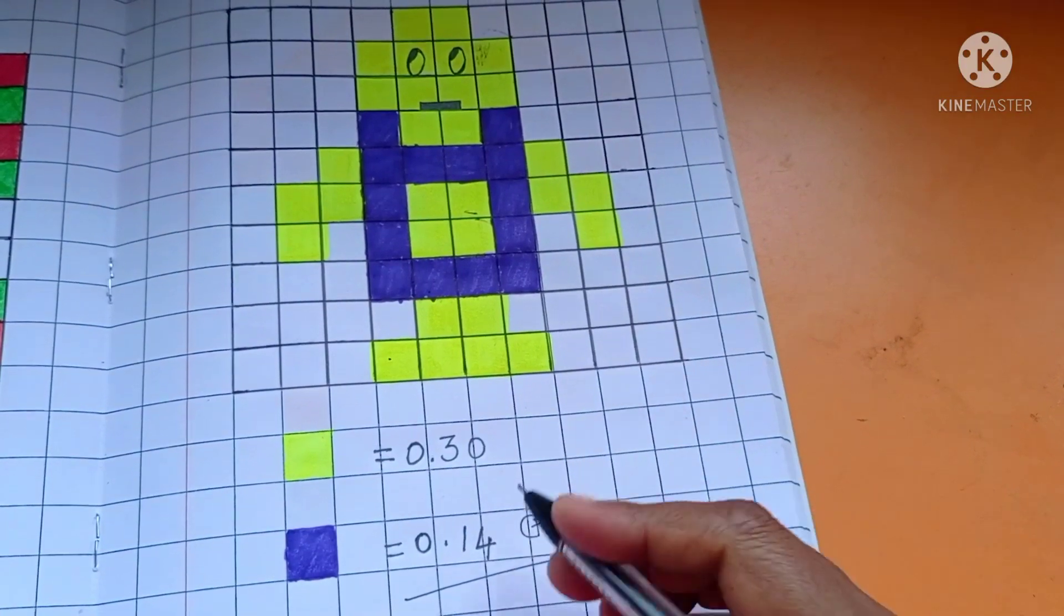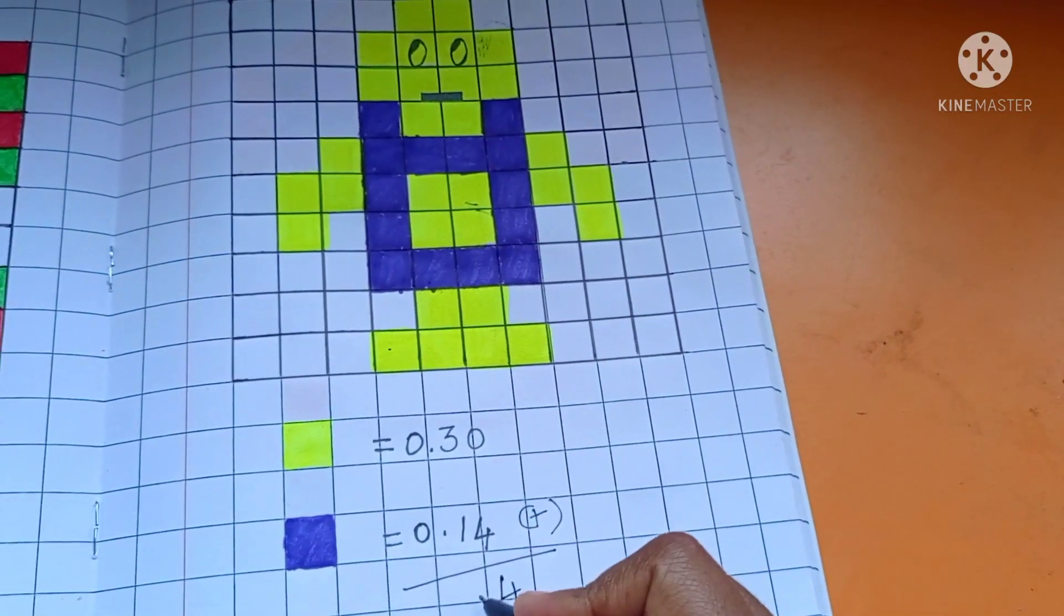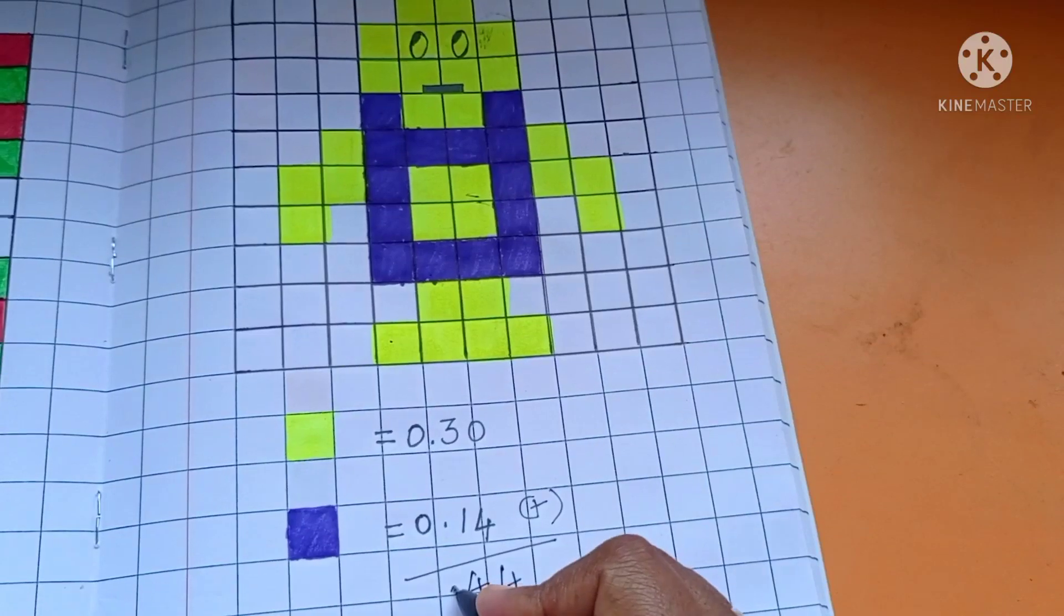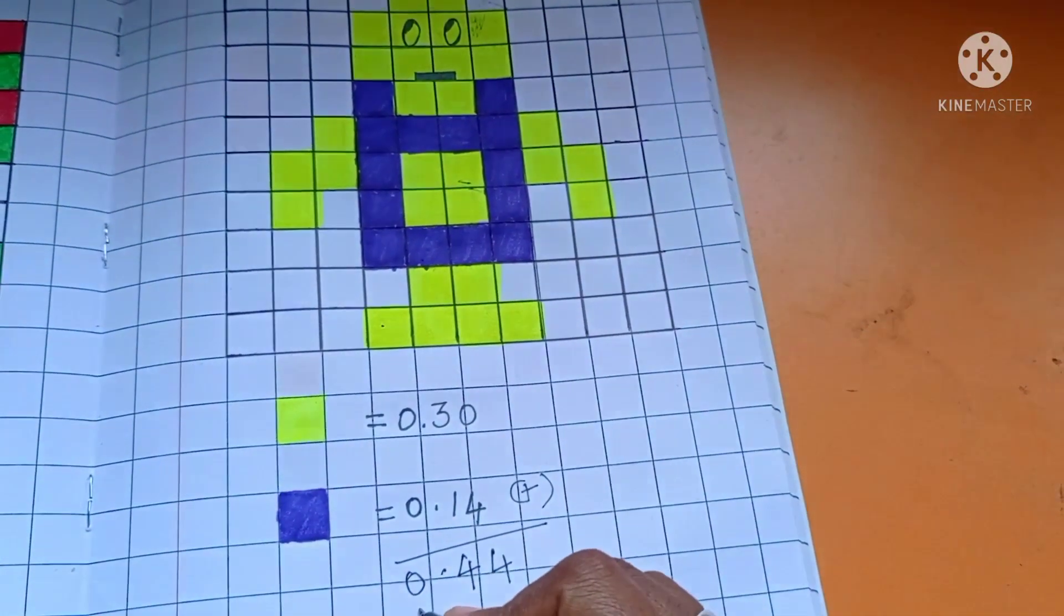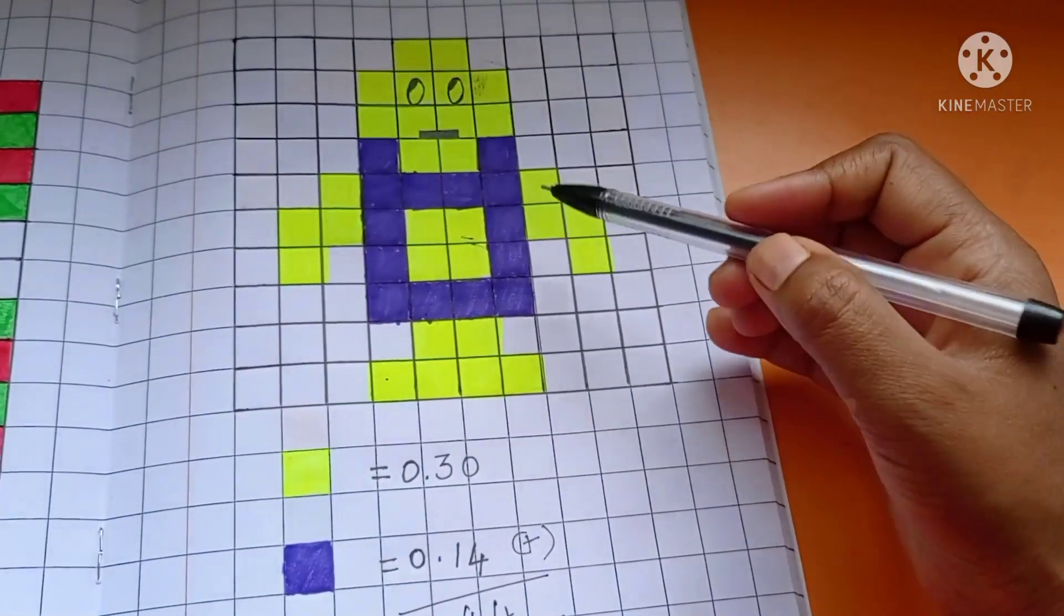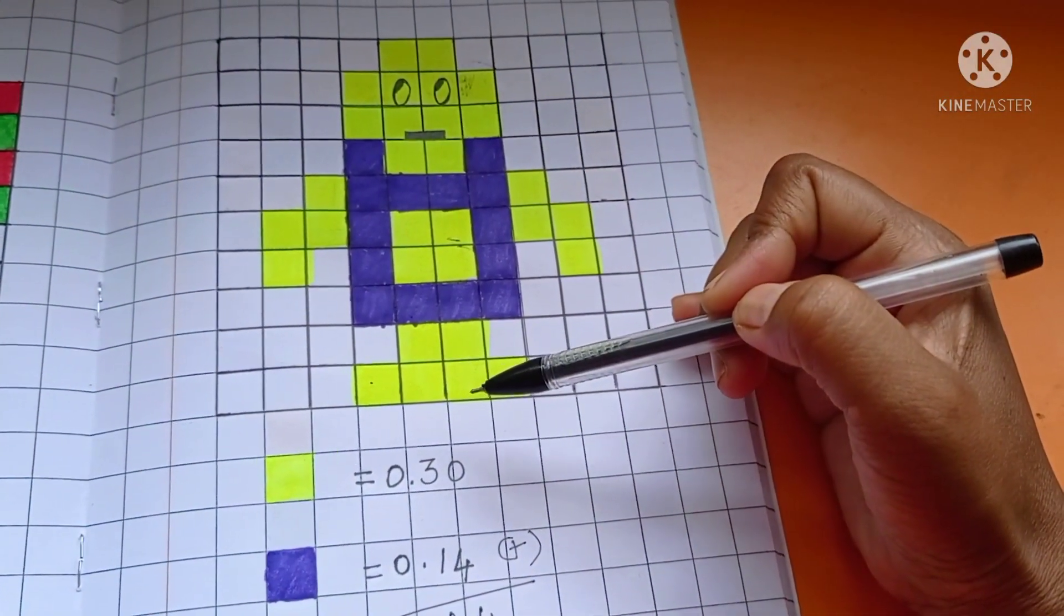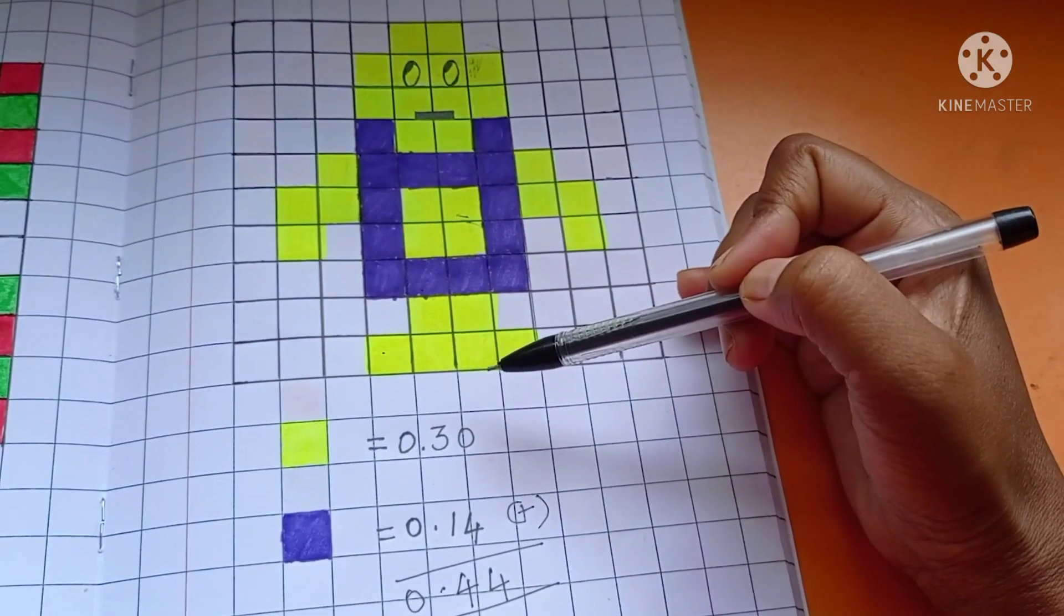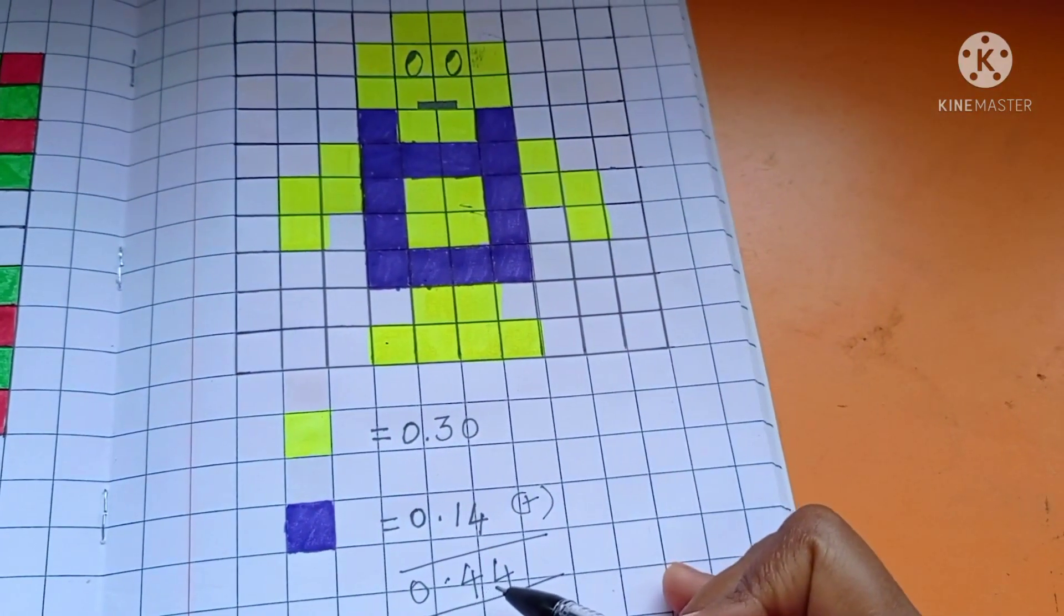0 plus 4 is 4, 3 plus 1 is 4, 0. So 0.44 parts. 0.44 total number of parts shaded in the grid 44. So how to represent 0.44.